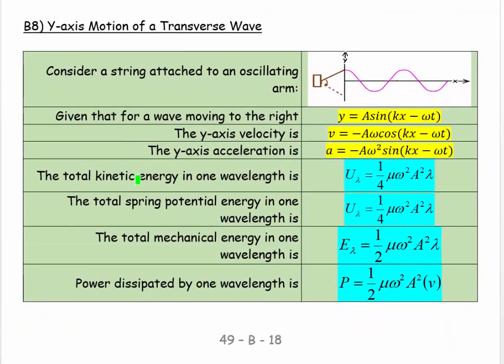If we look at this, we have a transverse wave. It's going to oscillate upwards and downwards. We'd like to pick a point and say, what's its y-value? And then what's that velocity in the y-direction? Not the velocity of the wave energy, but the velocity of the oscillation. And then what is the acceleration?